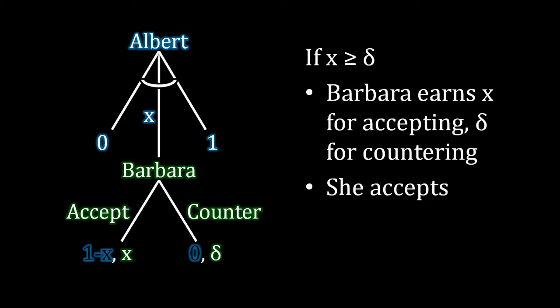In contrast, if he makes an offer of at least delta, now x is greater than or equal to delta, Barbara is going to accept under those circumstances, because x is now at least as good as rejecting and getting a delta value for countering. So in this case, she's going to accept.